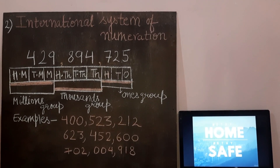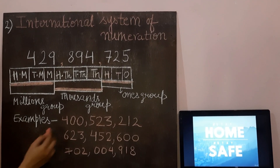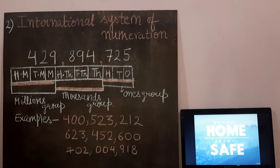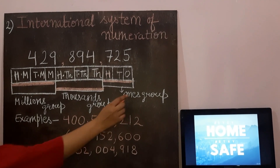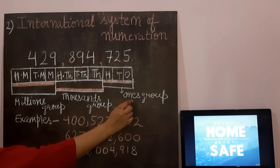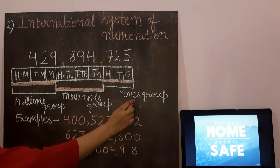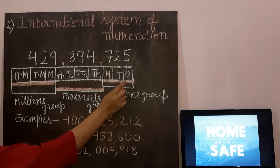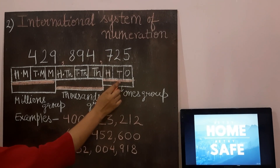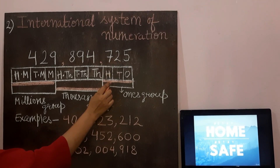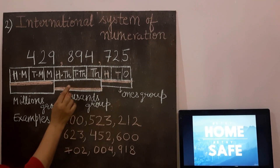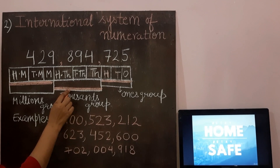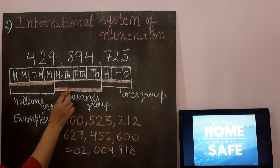There are 3 groups in the international number system. This group is the 1's group. It has 3 places: 1's, 10's, and 100's.